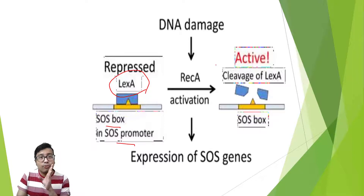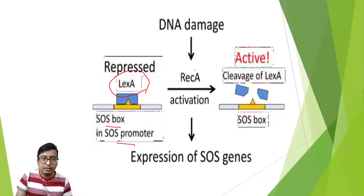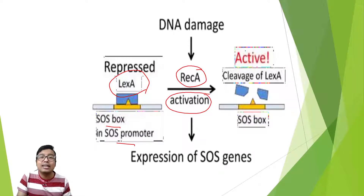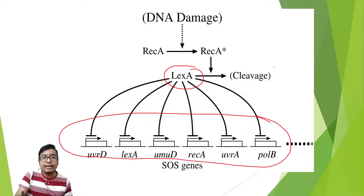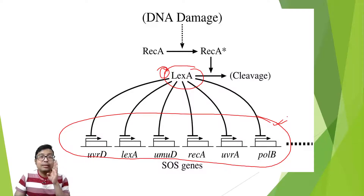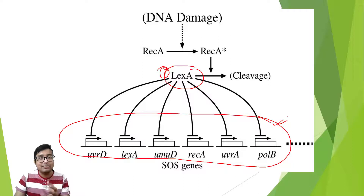What happens when there is an overwhelming amount of DNA damage due to UV radiation? The Rec A system senses it and becomes activated. What it does is cleave the Lex A. Now the Lex A system is no longer able to repress the SOS genes. The inhibition of the inhibitor is gone, so the SOS response system is now active and will repair the damaged DNA.